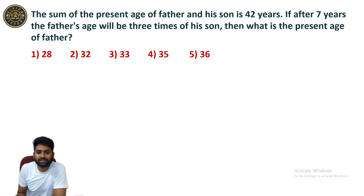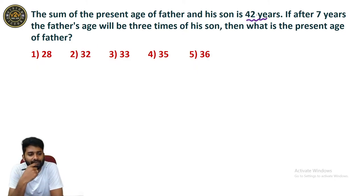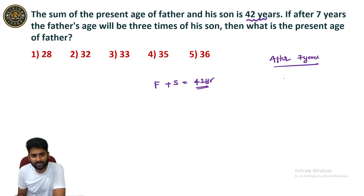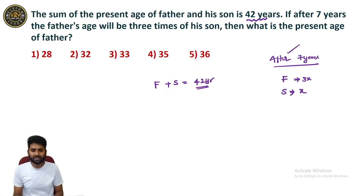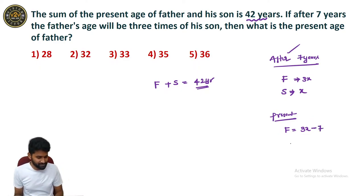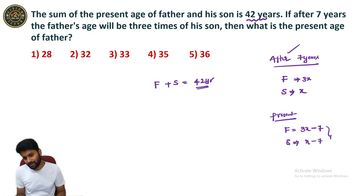Next question. The sum of the present ages of father and son is 42 years. After 7 years, the father's age will be 3 times his son's. What is the present age of the father? After 7 years, let son's age be x and father's age be 3x. If you want the present age: father is 3x − 7 and son is x − 7. The sum of these two values is 42, giving us 4x − 14 = 42.